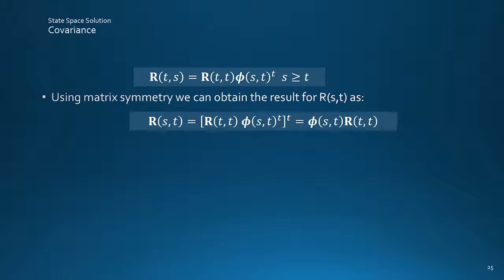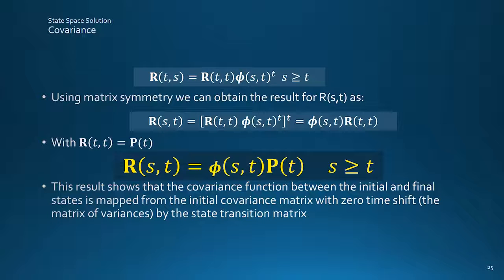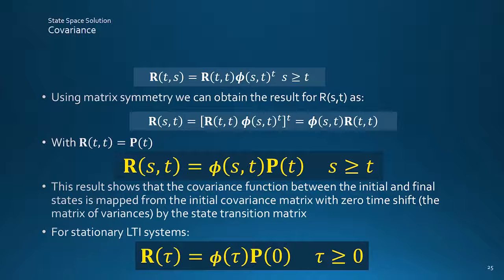The covariance matrix is important, and labeled P here as a function of only one time instant T in comparison to the more general covariance function RST. For LTI systems with stationary statistics, correlation like the STM only depends on the time shift tau from the initial time value P0.